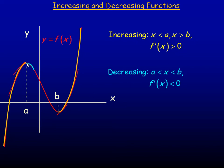Now the function is decreasing along here between a and b, so the interval is between a and b. And notice if I draw a tangent line there, anywhere in there, the tangent line slopes downward. And so a downward sloping tangent line means the derivative is negative. So a negative derivative means the function is decreasing.